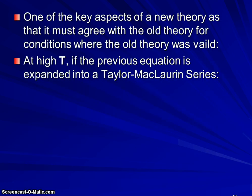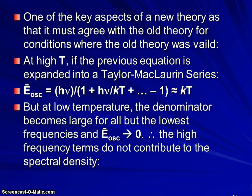At high temperature, if we expand Planck's equation in a Taylor McLaurin series, what we see is that at very high temperature we reach a point where the energy of oscillation will become kT. But at low temperatures, the denominator becomes large for all except for the very lowest frequencies.